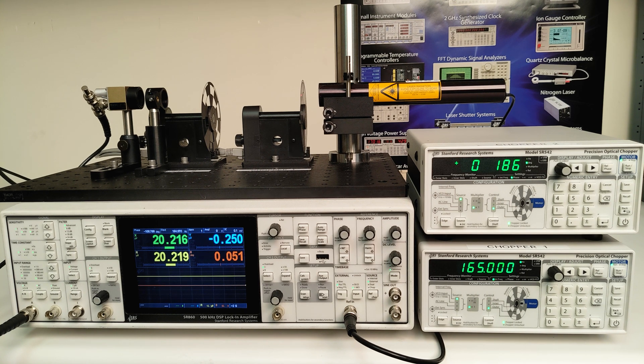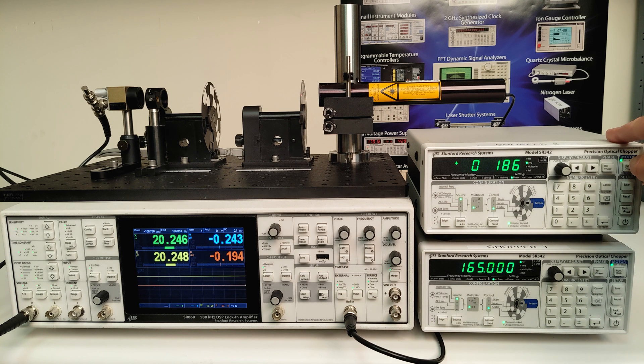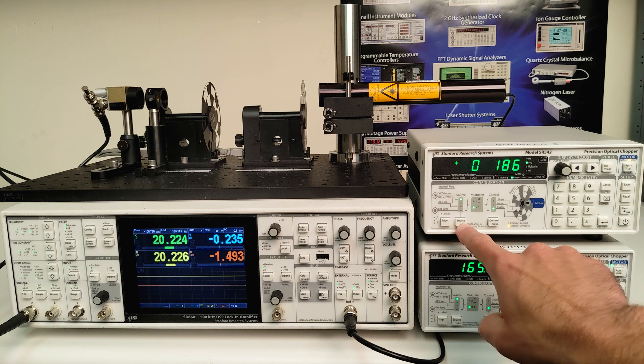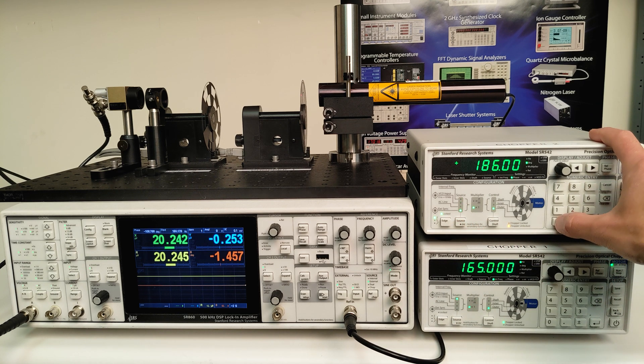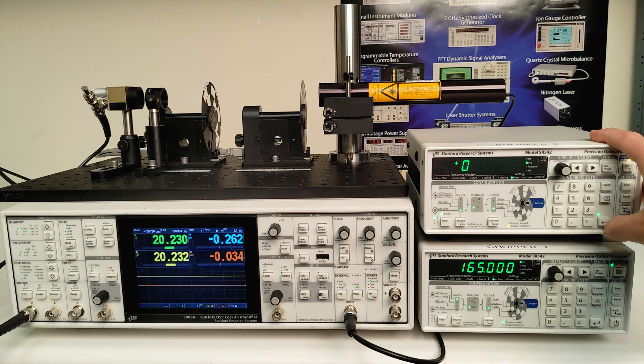Next we want to run chopper 2 in chop mode, synchronized to chopper 1. So, we power down the motor, reconfigure its source to external sync so that it follows chopper 1, I'll reset the phase setpoint to zero so that we have a clean starting point, and restart the motor.